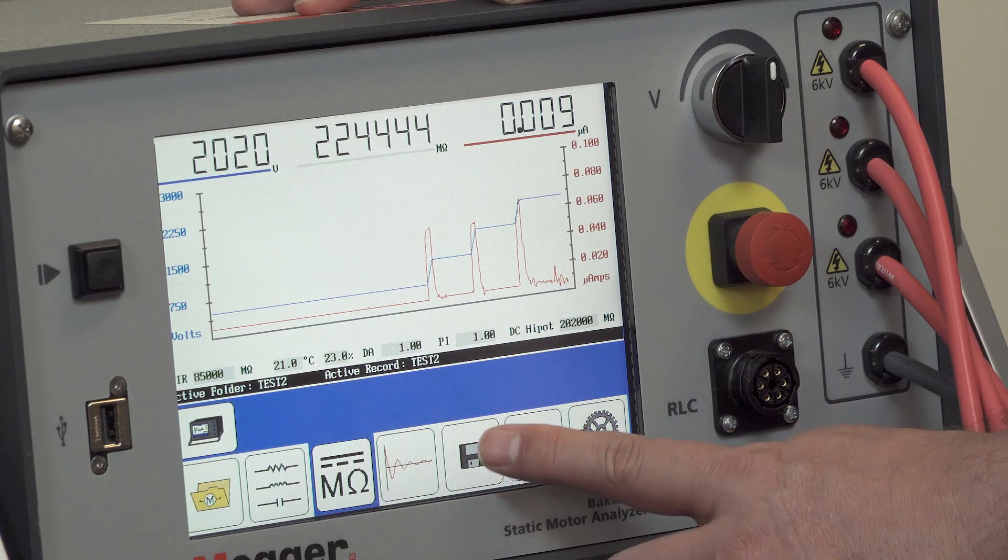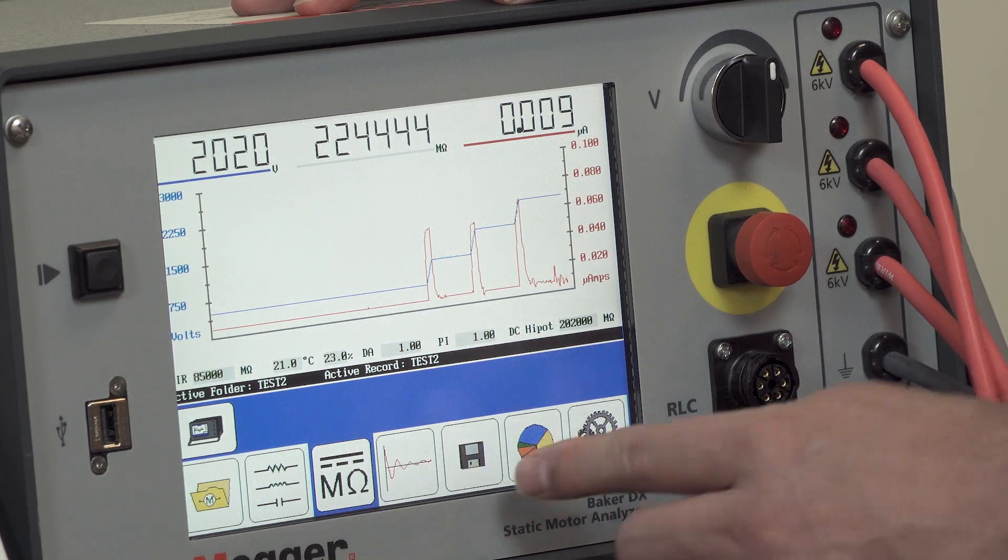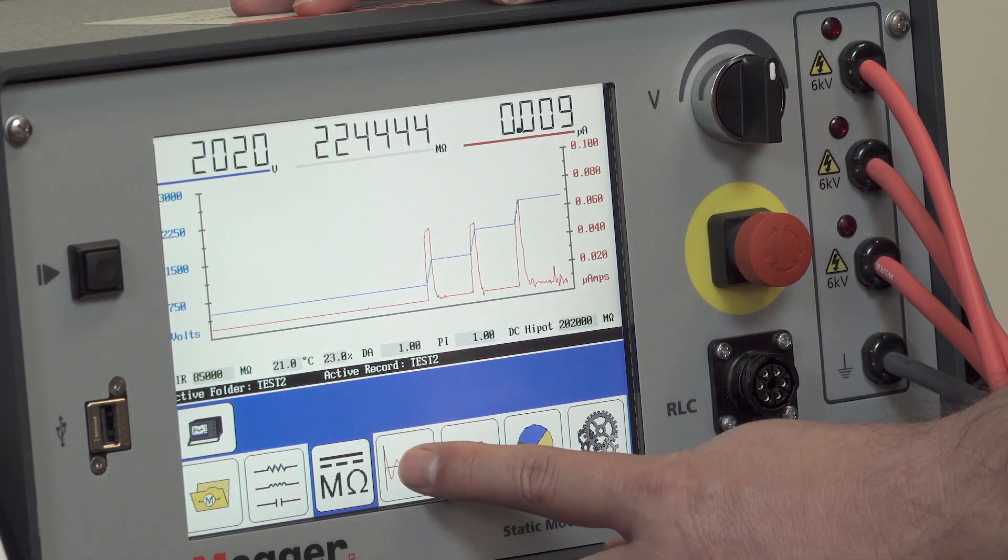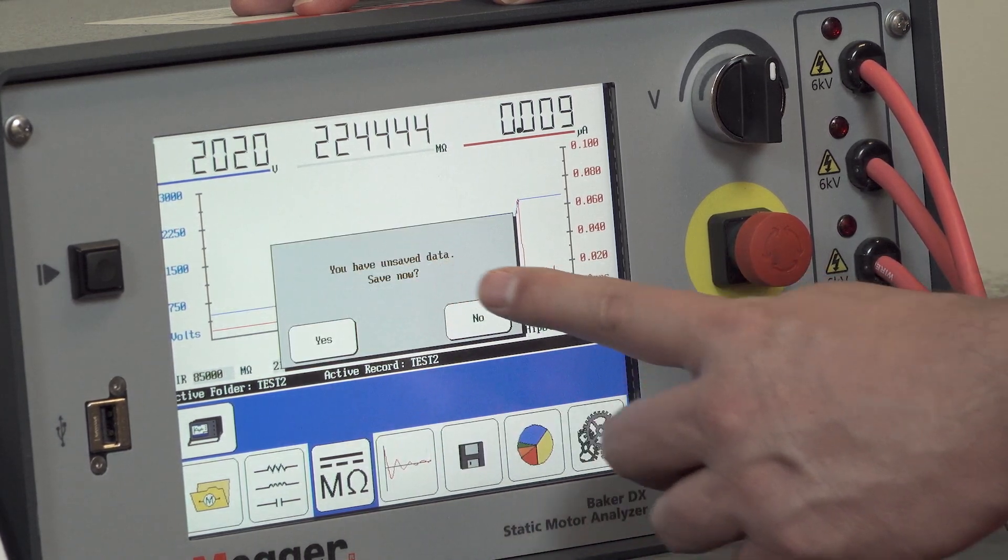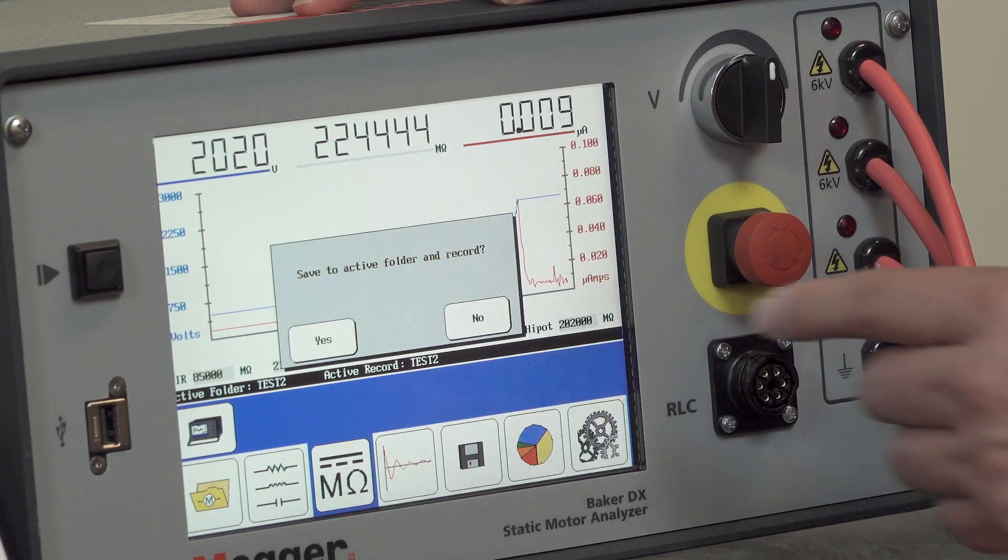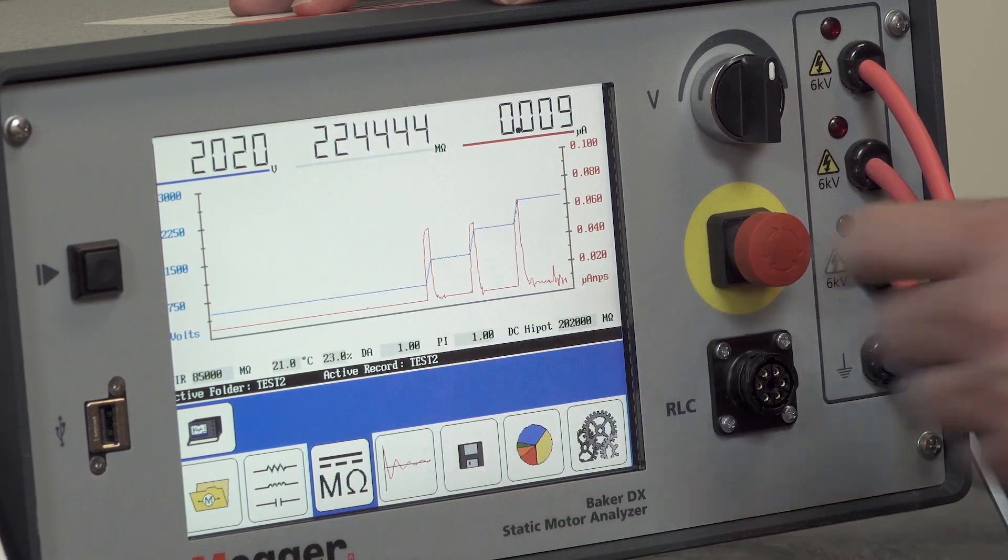Before we move on, we want to make sure we save the data. You do that by pressing the save icon here, but if for some reason you forgot and you just went on to search tests like we'll do now, it will prompt you to save the data. So we'll go ahead and say yes. And again, if I want to save to the active folder and record, I simply hit yes again and the data saved.